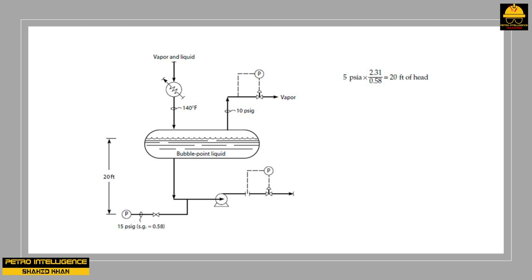Unfortunately, the drum is already almost full. Suppose we instead increase pressure by partly closing the back pressure control valve, quickly increasing drum pressure from 10 to 15 PSI G and pump suction pressure from 15 to 20 PSI G. This does not provide more NPSH, because as the pressure in the drum increases, additional lighter components dissolve in the liquid, making the liquid composition lighter.